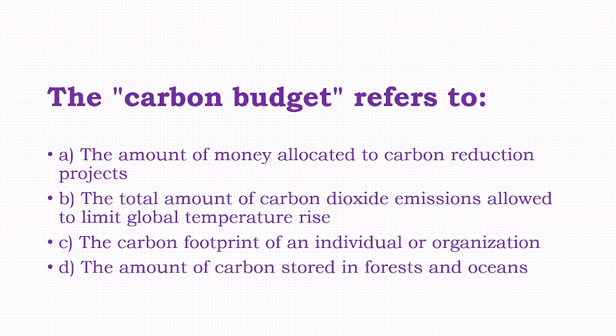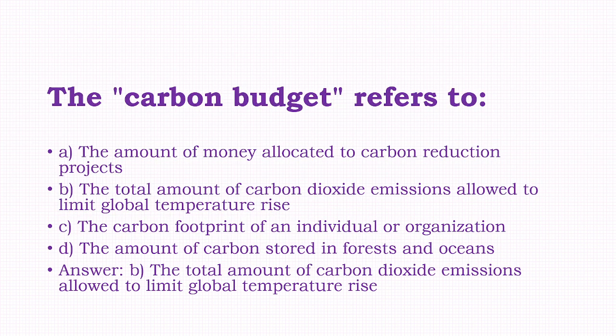The carbon budget refers to: the amount of money allocated to carbon reduction projects, the total amount of carbon dioxide emissions allowed to limit global temperature rise, the carbon footprint of an individual or organization, the amount of carbon stored in forests and fossils. The answer is option B, that is the total amount of carbon dioxide emissions allowed to limit global temperature rise.